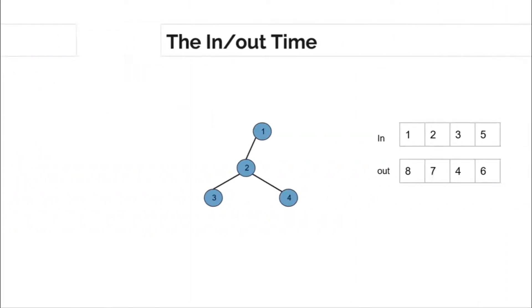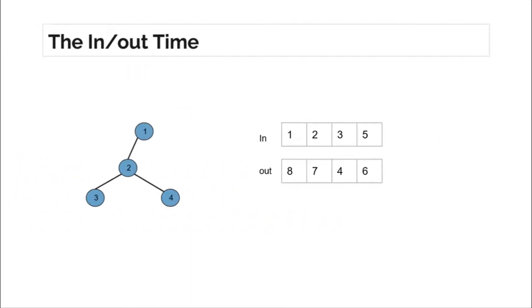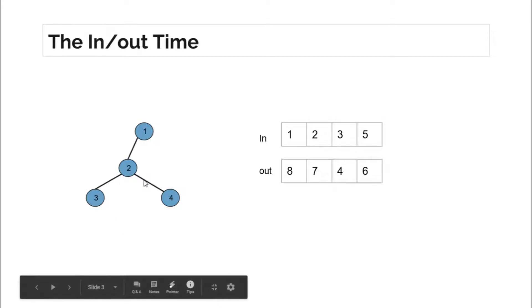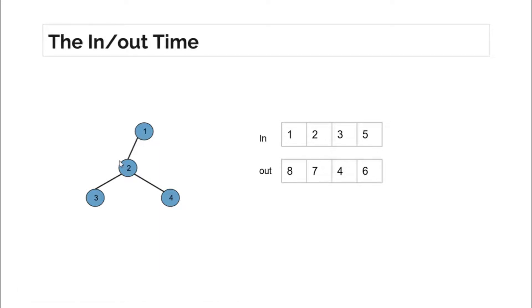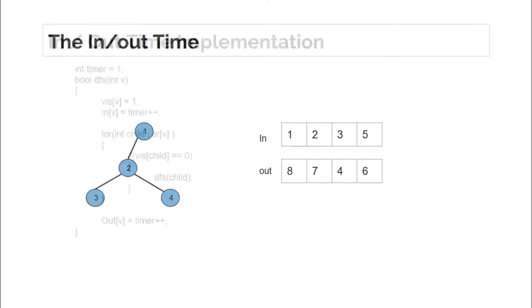This is where the in/out time helps. The in time is the time when you enter a node during DFS, and the out time is when you leave that node. For example, if we make a DFS call to node 2 from node 1, the time you reach node 2 is its in time, and after node 2 has processed all its children and is ready to backtrack to node 1, that is its out time.